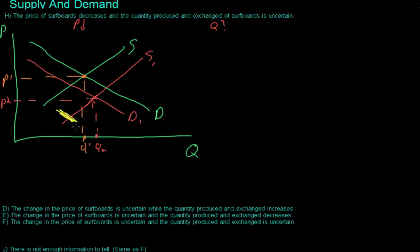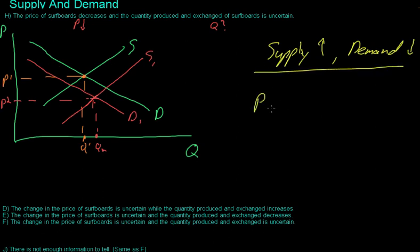So when both supply is increasing and demand is decreasing, so let me write this. We have supply going up, increasing, and then demand going down, decreasing. That will lead to P, the price going up, and the quantity being uncertain.